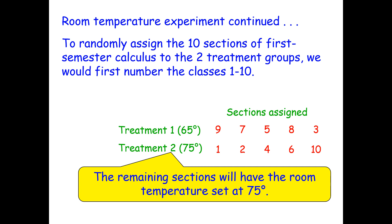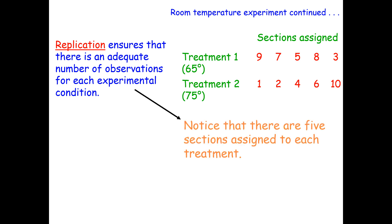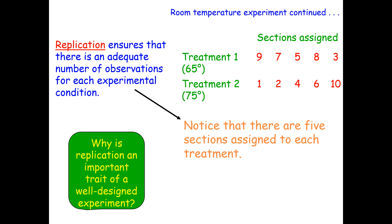Replication ensures that there is an adequate number of observations for each experimental condition. Notice that there are five sections assigned to each of the treatments — this is replication. Replication is important so that we can account for the natural variation that occurs within the experimental units.